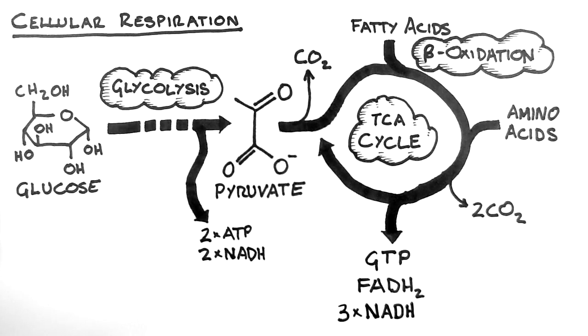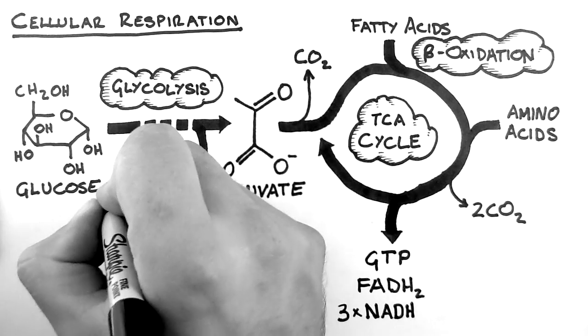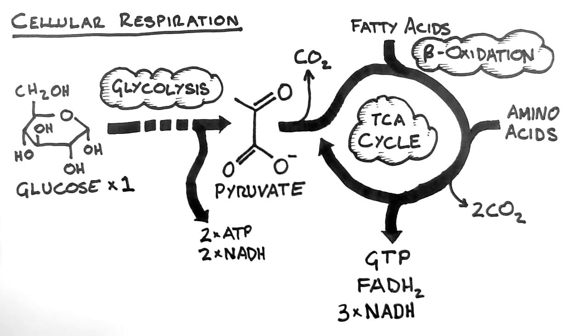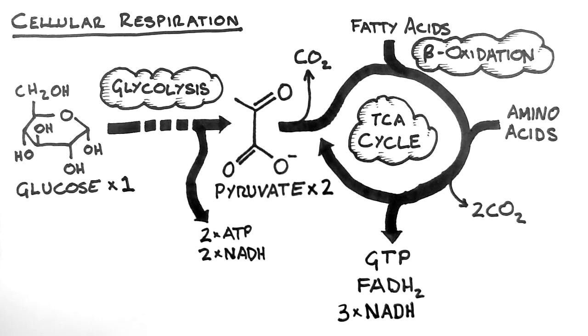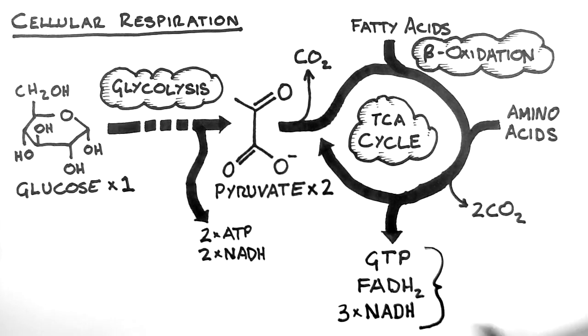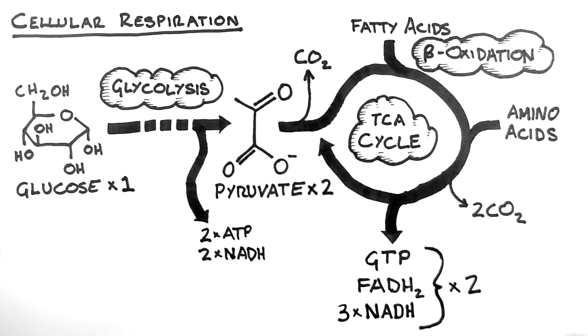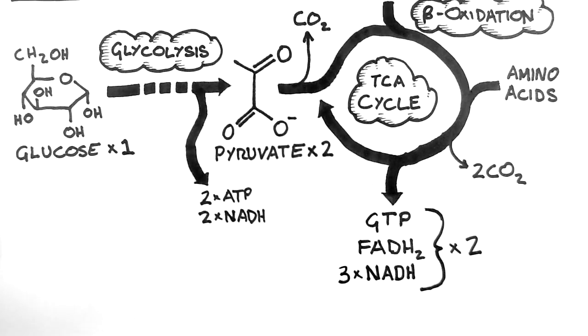Note that when glucose is the substrate, one glucose molecule creates two pyruvate molecules, and this leads to the production of twice the amount of GTP, FADH2, and NADH produced by the TCA cycle.